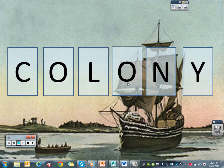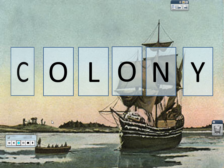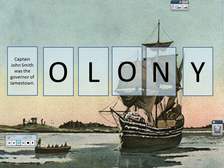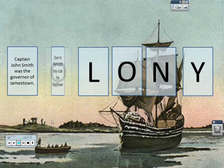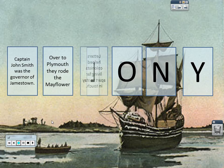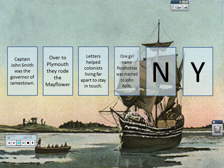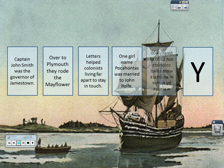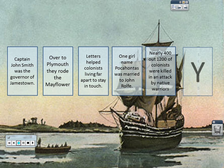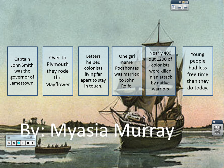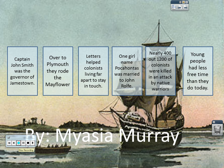This is a fun technology project you can do in conjunction with notebooking. The kids would do a colony acrostic to get their notebook, but then they can turn it into a presentation for the class. If you click, it causes these things to spin — the letters spell out Colony, helping the colonists, one girl named Pocahontas, et cetera — all the way across, and they have their name at the end. I'm going to show you how this is done.